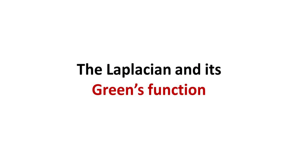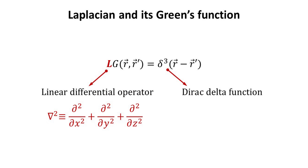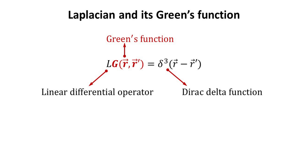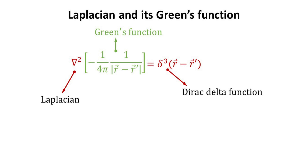Part 1: The Laplacian and its Green's Function. Consider a linear differential operator L — for example, the Laplacian is a prime example of interest for our video. The Green's Function, when acted on by the differential operator L, yields the Dirac Delta Function. For the 3D Laplacian operator, the Green's Function is well known and is given as shown within the green bracket.